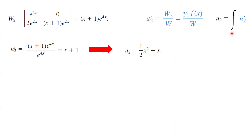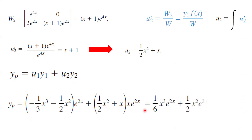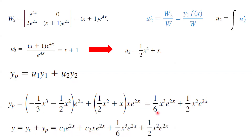We found u1 and u2, and we know y1 and y2. So y sub p, the particular solution, is u1*y1 plus u2*y2. In turn, you can write it as: u1 = negative one-third x cubed minus one-half x squared, times y1 = e^(2x), plus u2 = one-half x squared plus x, times y2 = x*e^(2x). If you simplify this, you get (1/6)x cubed*e^(2x) plus (1/2)x squared*e^(2x). The general solution, which is the complementary plus the particular solution, is c1*e^(2x) plus c2*x*e^(2x) plus the particular solution terms. This is the method of variation of parameters, helping us calculate the solution using the complementary and particular solutions.